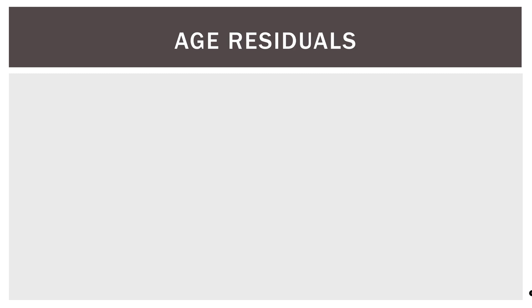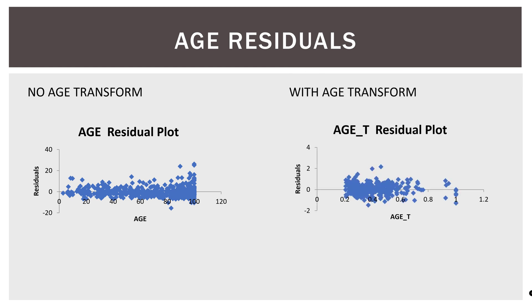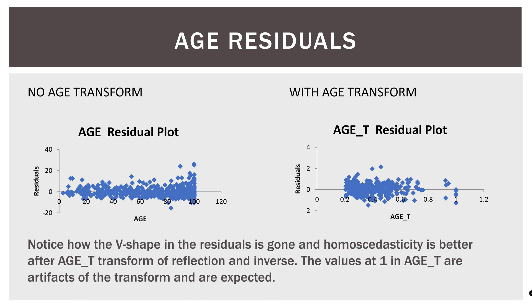So here are the residuals for the age of the home. Without a transform, it looks like this. We can see they're all pushed over to the right, kind of have a V shape. We can see that with the transform, it's much more compact around zero, spread out across the axis. With the exception, we do have those few points over on the right, again, but like I said, they're just an artifact of the transform itself. So notice how the V shape and the residuals is gone, and homoscedasticity is better after age underscore T transform of reflection and inverse. So like I said, the values at one in age underscore T are artifacts of the transform and are expected.